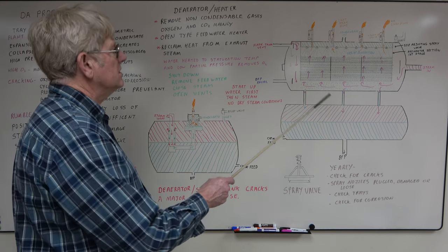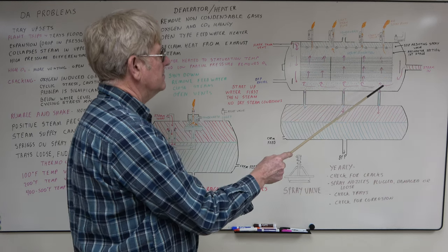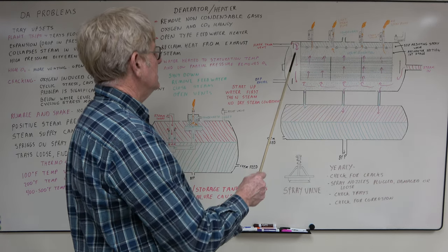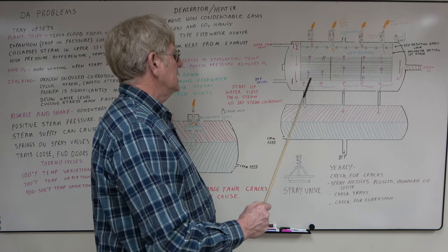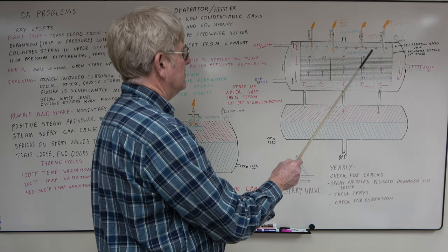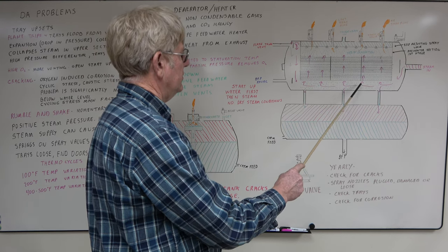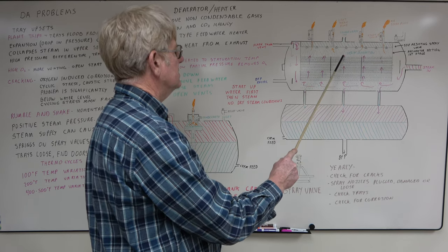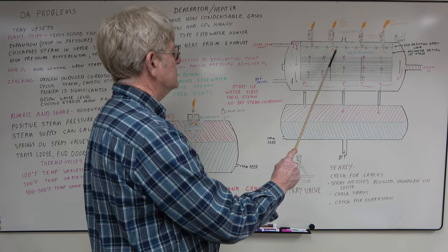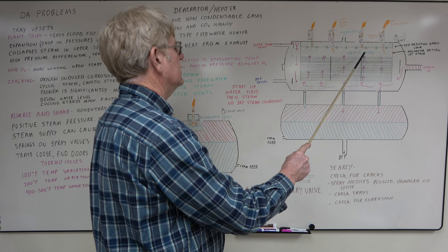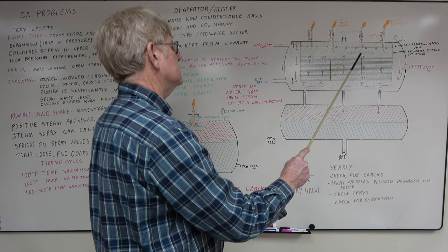This style of deaerator, you have your steam coming in, IP turbine exhaust, you have your flash tank vent dropping in, you have your condensate coming in the top. Your steam comes in, it counter flows. Down here you have very little oxygen in the steam coming up through the trays, and the water is sprayed in. The condensate removes all the oxygen, condenses the steam.